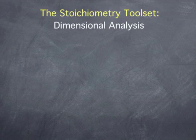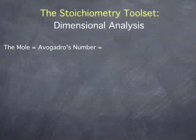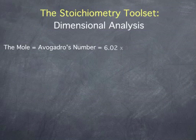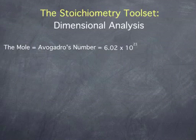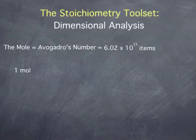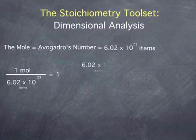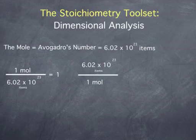A particularly useful unit in chemistry is that of the mole. The mole is defined as Avogadro's number of items, where Avogadro's number is often abbreviated as N_A and has the value 6.02 times 10 to the 23rd. So the definition of the mole can be written as 1 mole equals 6.02 times 10 to the 23rd items. This unit definition gives us the ratios: 1 mole over Avogadro's number of items equals 1, and Avogadro's number of items over 1 mole equals 1.